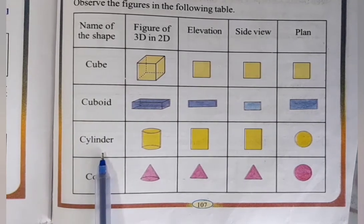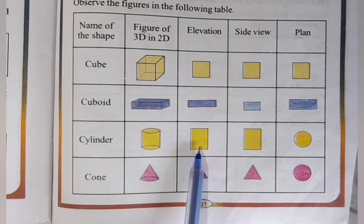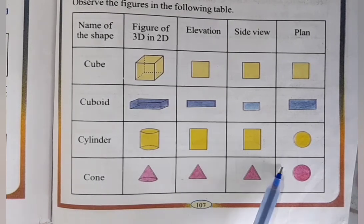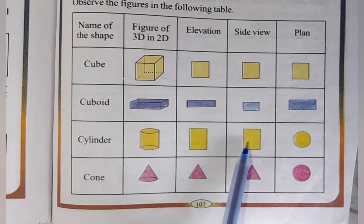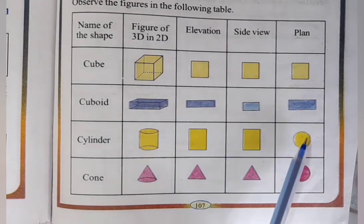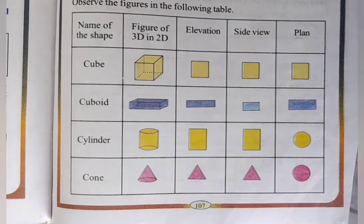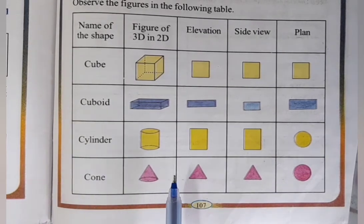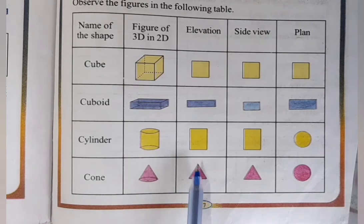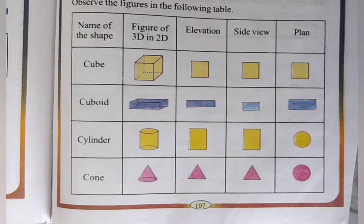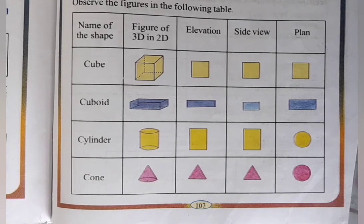The next figure is a cylinder. In the elevation view it looks like a rectangle, and in the side view when we see the object from the left or right it also appears as a rectangle. In the plan or top view it appears as a circle. The next figure is a cone — observe it in the elevation view, side view, and plan view.